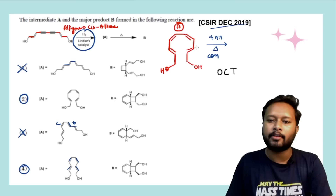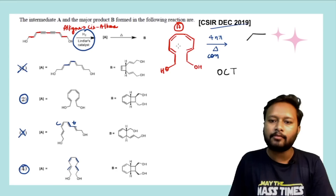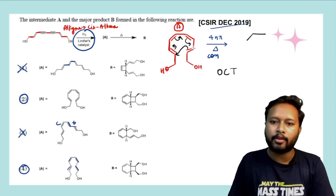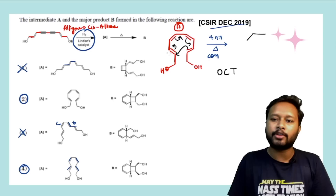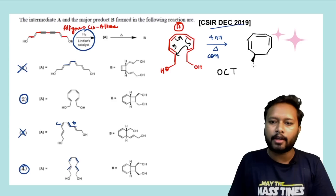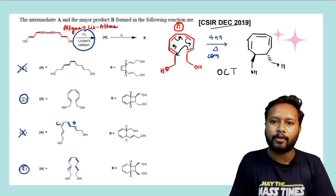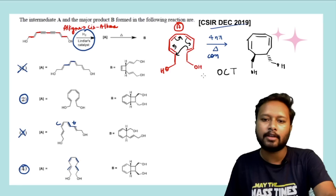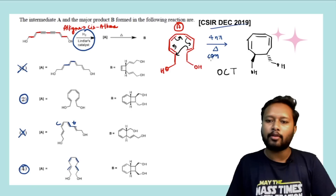The rings are going to close in this way — it's an electrocyclic ring closure reaction. The ring will close and you will have an eight-membered ring formed, with double bonds here, here, and here, and these two groups going to be trans to each other. So you can have OH and then OH on opposite sides. Opposite + conrotation gives you trans.